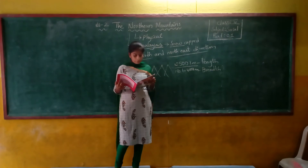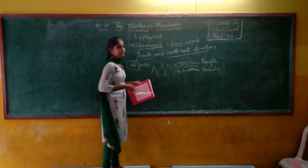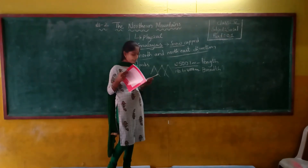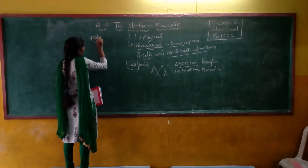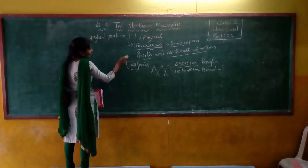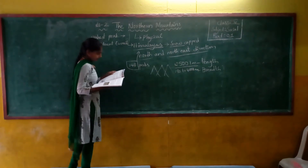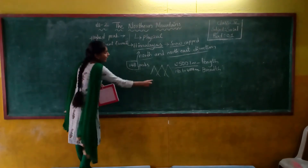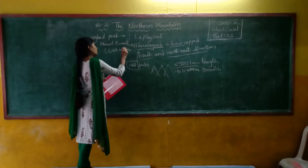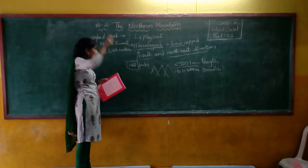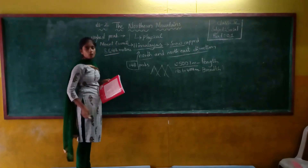There are around 140 peaks in the Himalayas. How many peaks are there, children? There are 140 peaks in the Himalayas. Mount Everest is the highest peak in the world. The highest peak in the Himalayas is Mount Everest. How many meters high is it? Mount Everest's height is 8,848 meters. That is the reason Mount Everest is called the highest peak of the Himalayas.